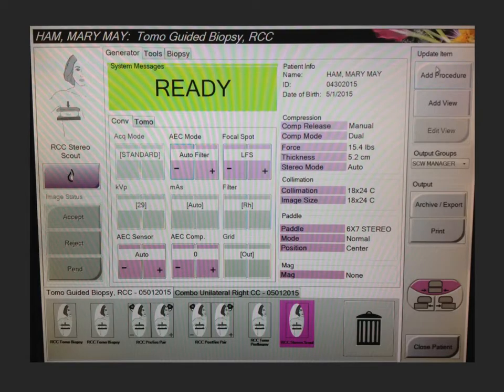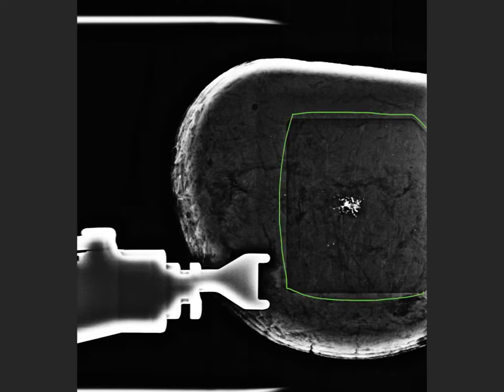This is the Hologic tomobiopsy unit screen and we're pretty much always going to start by doing some form of a scout depending on the projection to just make sure that our lesion was in the field of view. So here's our scout image. You just want to check the borders of the paddle opening to make sure that your lesion, seen very clearly here, is well within those borders. And then you go on and do the first tomo image for targeting.